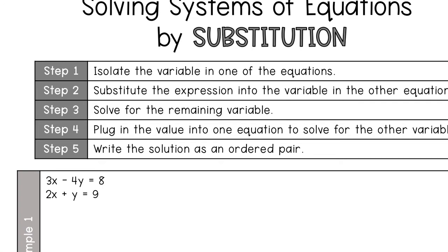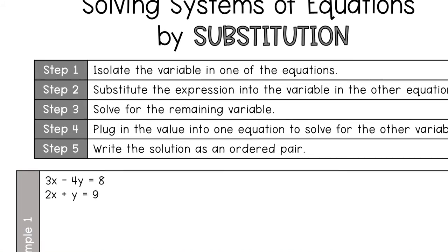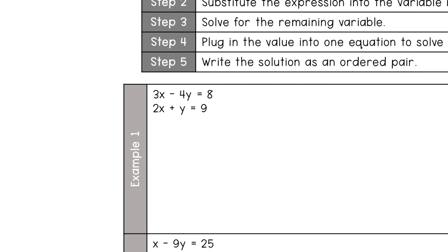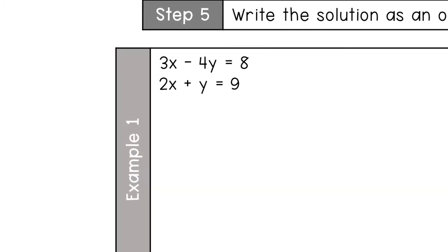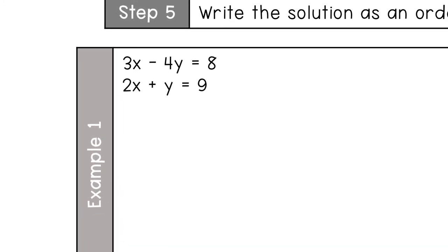I know it seems like a lot of steps, and honestly it is, but it's nothing you can't handle — we've solved equations in class before. So let's look at example number one. The system is: 3x minus 4y equals 8, and 2x plus y equals 9.